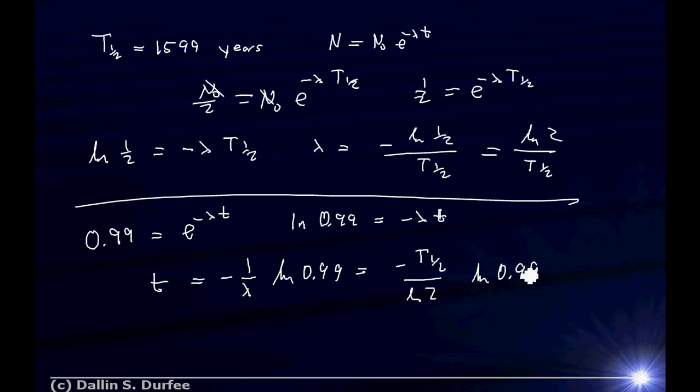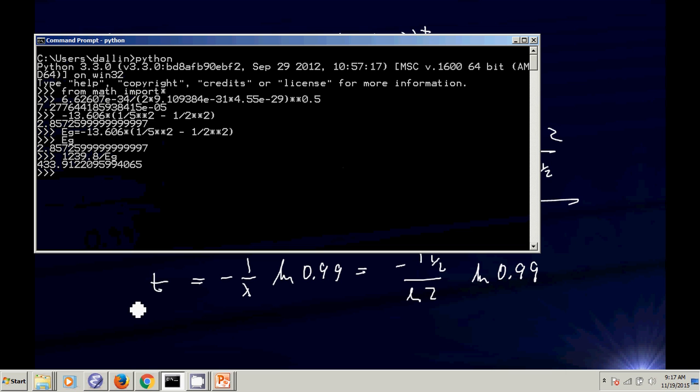I'm going to get a positive answer. And as this number goes down, the time will go up. That makes sense. If the half-life is longer, I have to wait longer. That's good. So this seems to make sense. And the units, that has no units, that has no units. This is units of time. Excellent. So it looks like the units are going to work. So let's just go to our calculator now and plug things in.